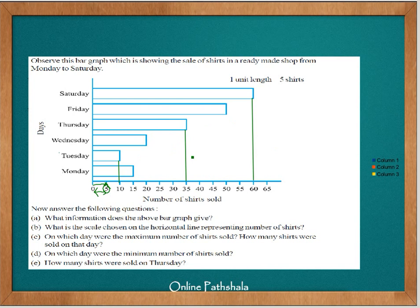The width of each bar remains constant — it is uniform for all the days and does not change. The only varying parameter is the length of the bar, which changes according to the data being represented. This is how we can analyze and interpret a bar graph.